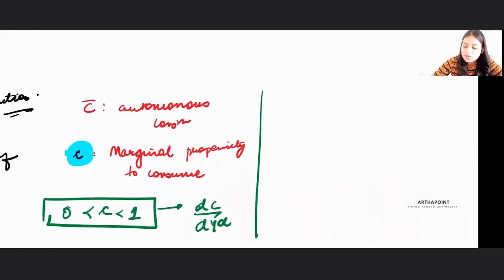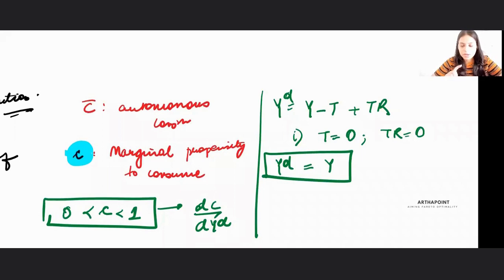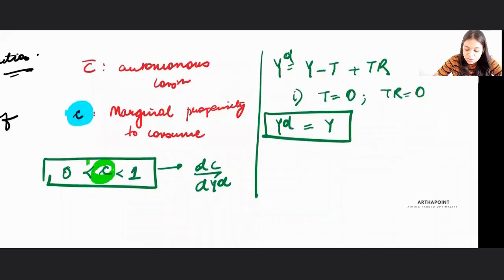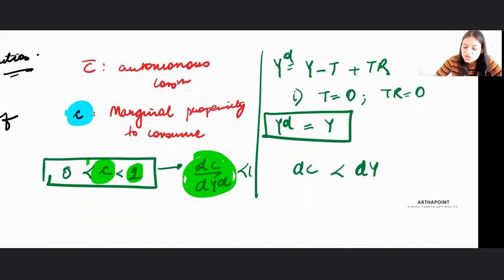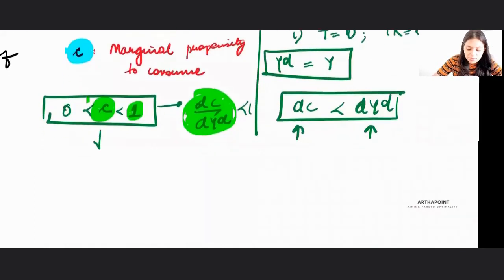Now, my disposable income is actually income minus taxes plus transfers from the government, but I can have cases where my taxes are 0, transfers are 0, and my disposable income becomes equal to my actual income. Of course, whenever you increase your income, you will not consume that entirely. You will save some amount. That is why the marginal propensity to consume is less than 1. The change in consumption when income changes is less than 1, which means that the change in consumption is less than the change in income. When income increases, consumption will increase, but by less amount. Some amount will be saved.